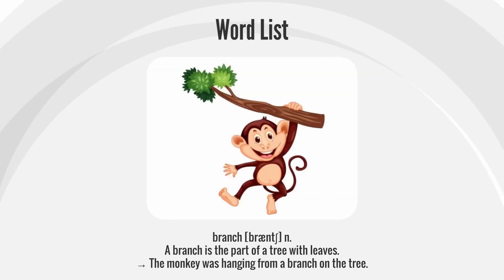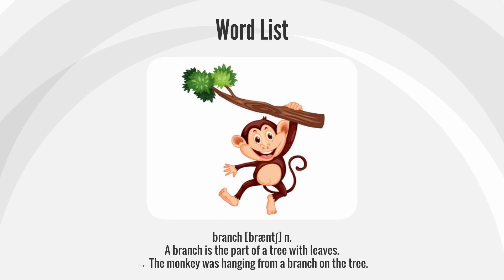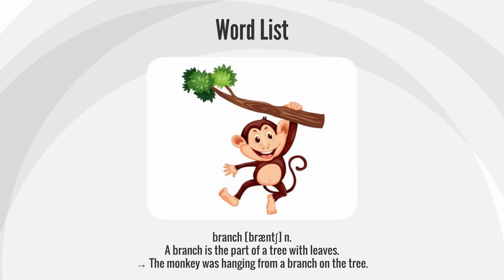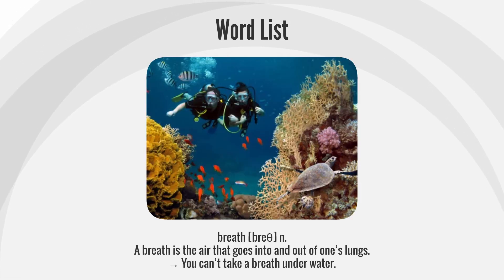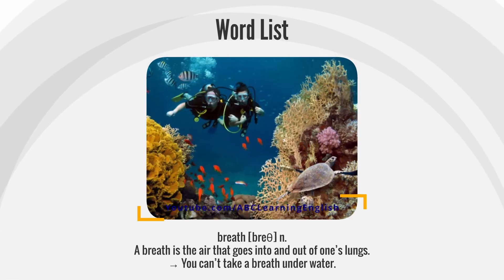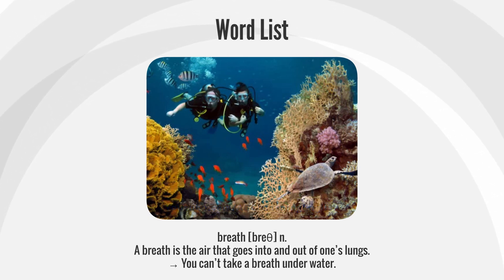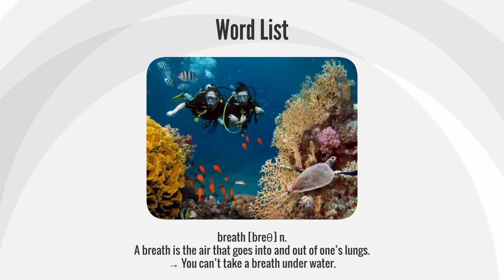Branch — a branch is the part of a tree with leaves. Example: The monkey was hanging from a branch on the tree. Breath — a breath is the air that goes into and out of one's lungs. Example: You can't take a breath underwater.